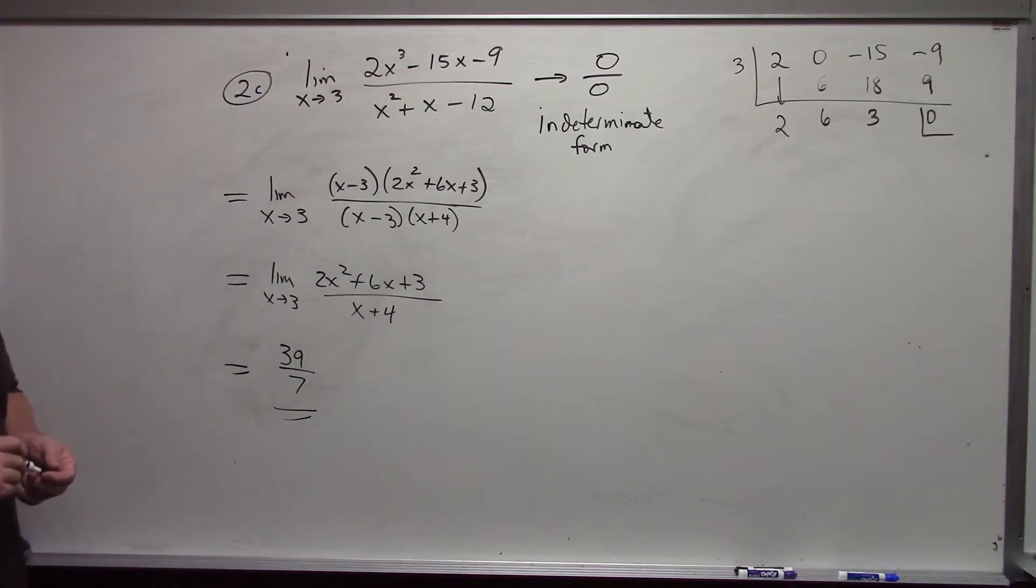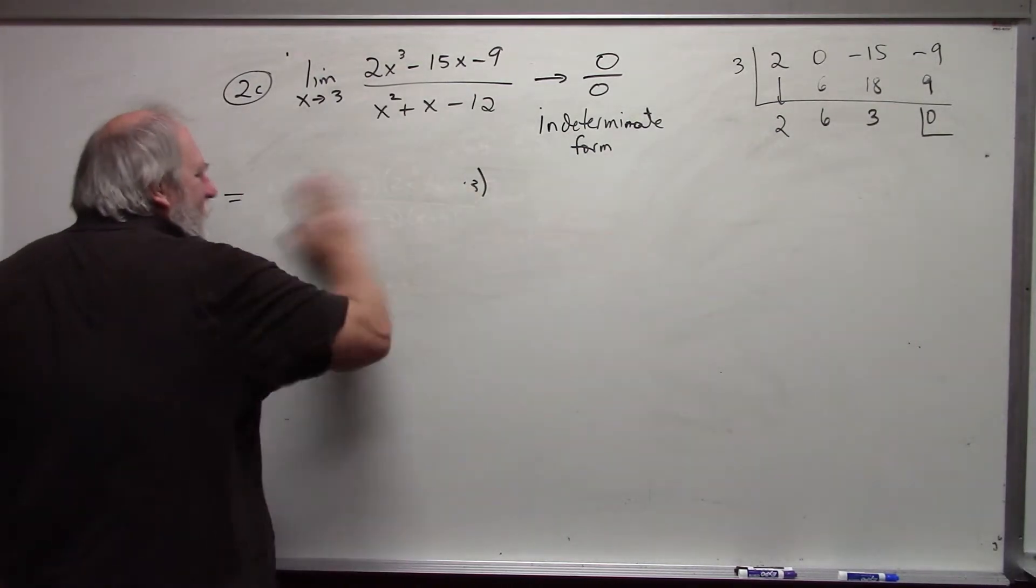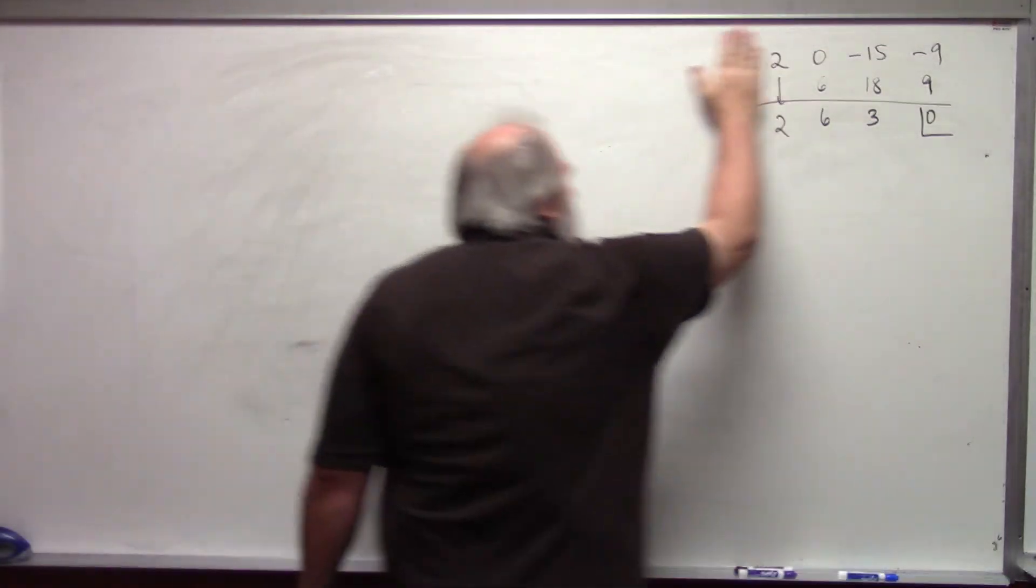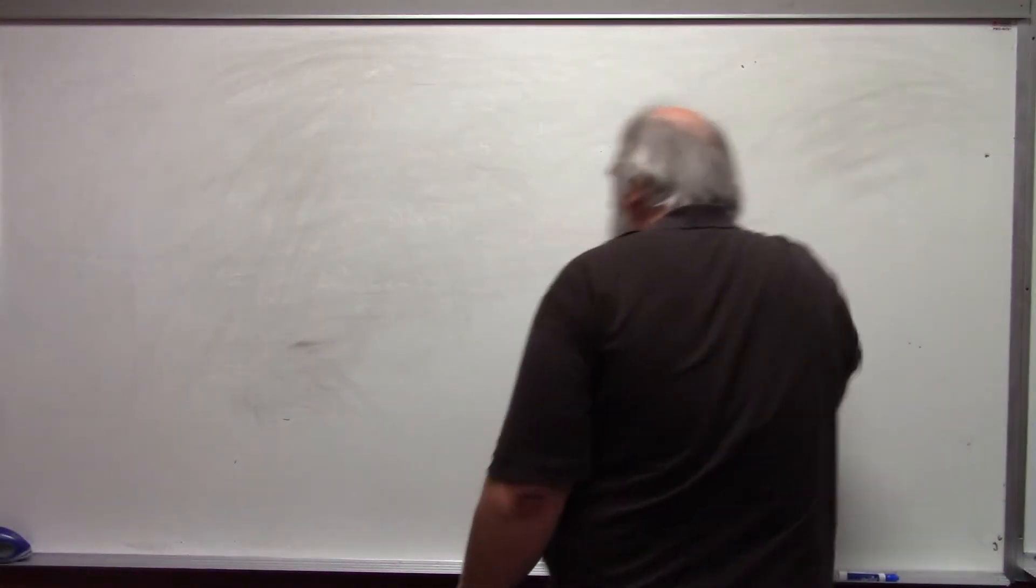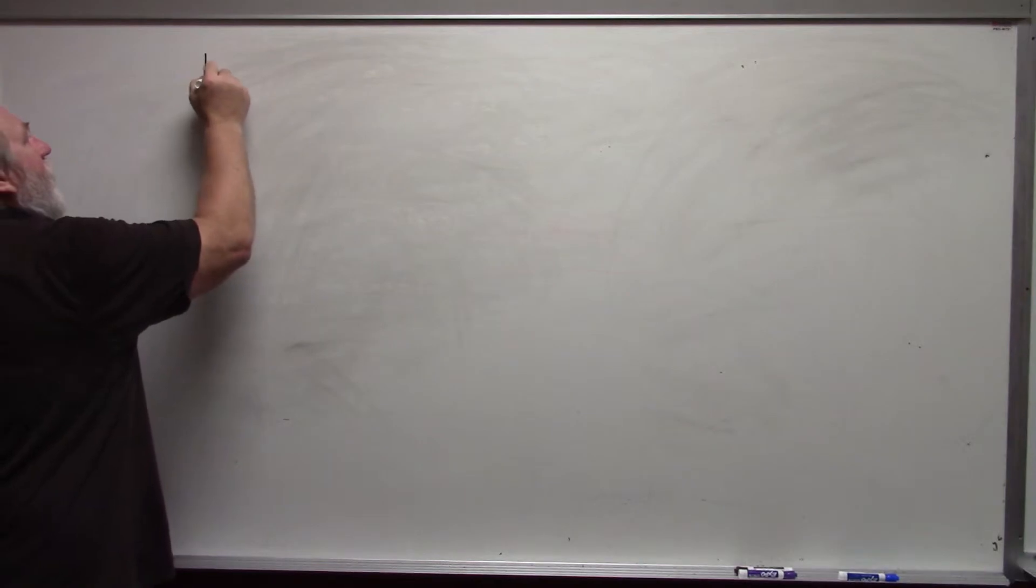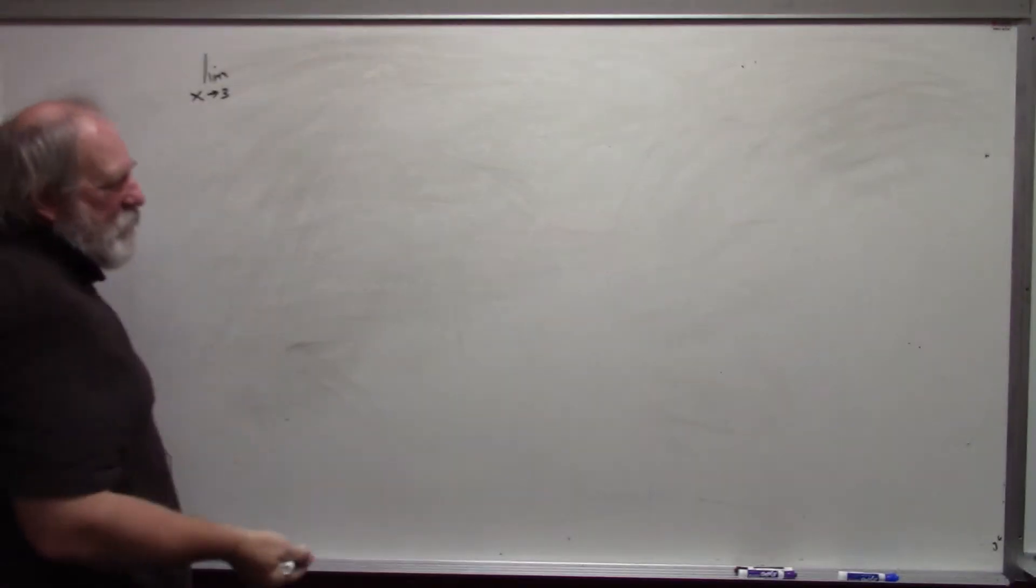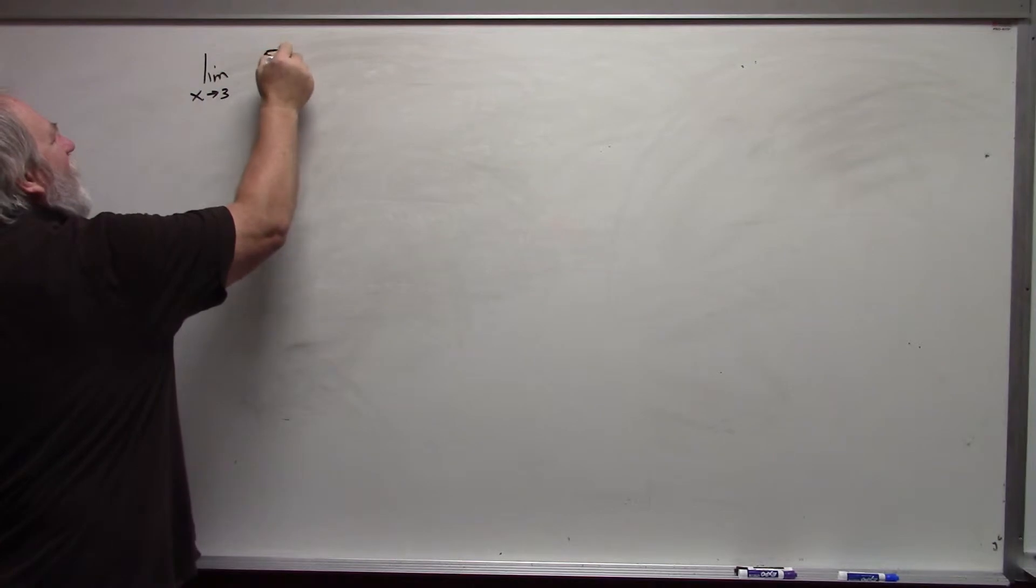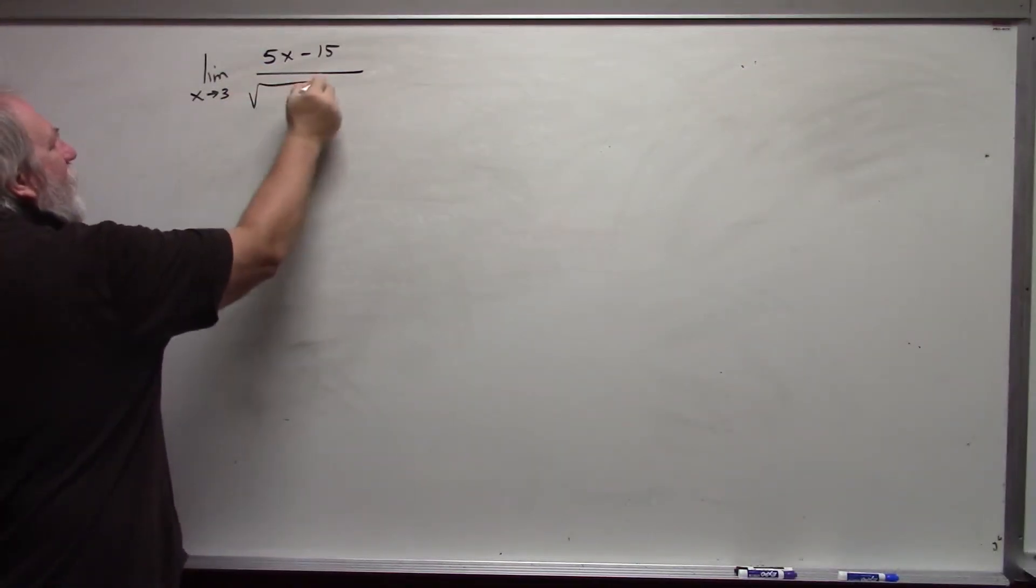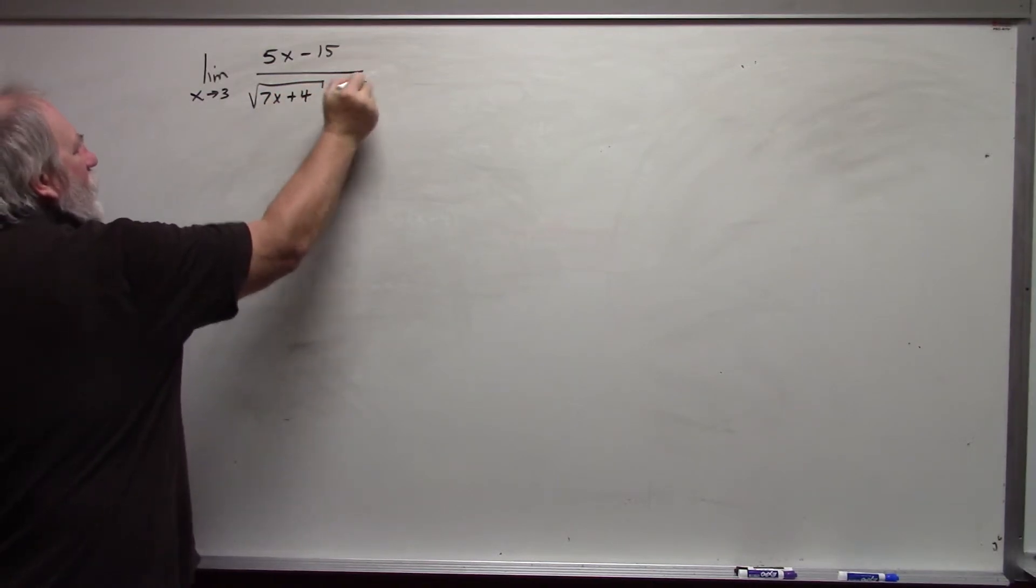My third example. And yes, I normally erase with my hand. It's just much simpler and easier and faster. My third example is the limit as x approaches 3 of 5x minus 15 over the square root of 7x plus 4 minus 5.